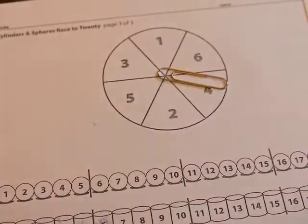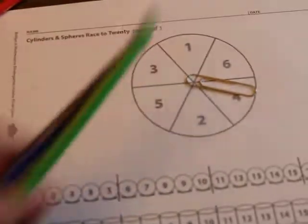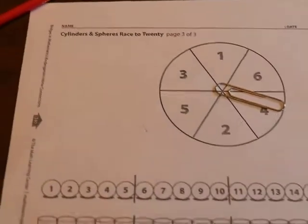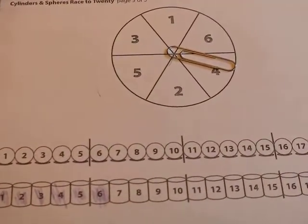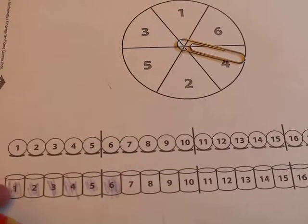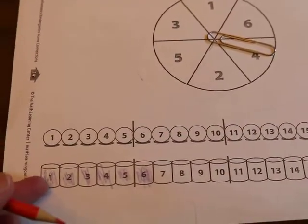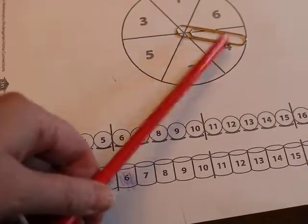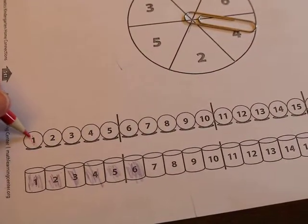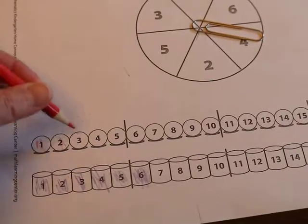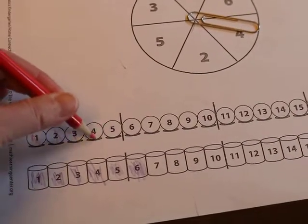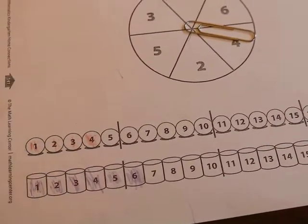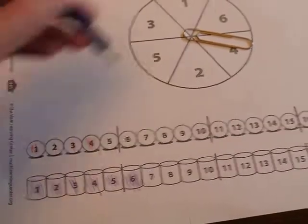So they would choose a different color. They start with two colors and you start with two colors, so each player only has two colors. And since Miss Skinner was cylinders, the other person playing is going to be spheres and they spun a four, so I'm going to color in one, two, three, four.